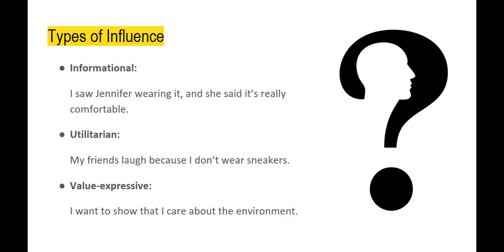So what are the types of influences we get from our social group? One is informational — let's say you see your friend Jennifer wearing a great cardigan and you ask her if it's as comfortable as it looks, and she says yes, so you go to the store and buy it. Utilitarian, on the other hand, is more of a peer pressure influence — it means that you need to buy that product in order to fit in with your peer group, maybe because your friends have been judging you for not wearing the right kind of sneakers.